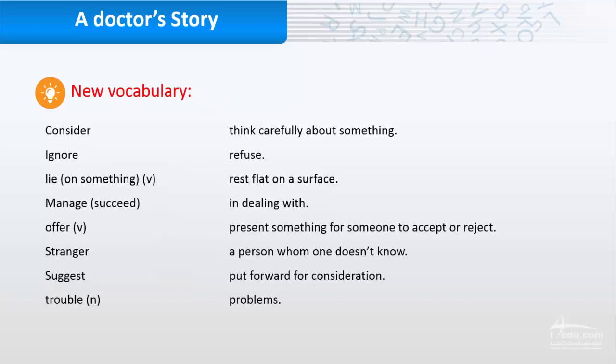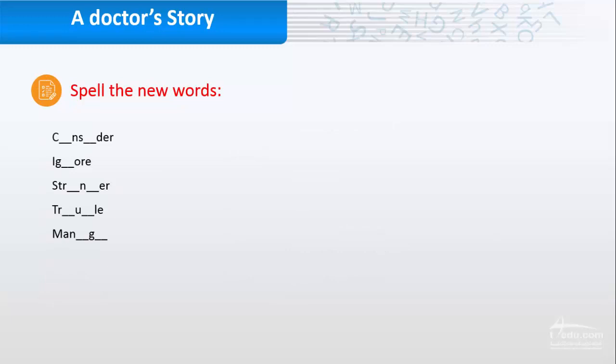So the new vocabulary we have: considered - think carefully about something. Ignore - refuse, like saying no. Lie - rest flat on a surface. Manage - succeed in dealing with. Offer - present something for someone to accept or reject, like what the stranger did with Jack. No, Jack, when he gave the money to the stranger but he refused, so this is an offer. Stranger - a person whom one doesn't know. Suggest - put forward for consideration. Trouble - problems. Spell the word: consider, excellent. Ignore, perfect. Stranger, trouble, manage, perfect.